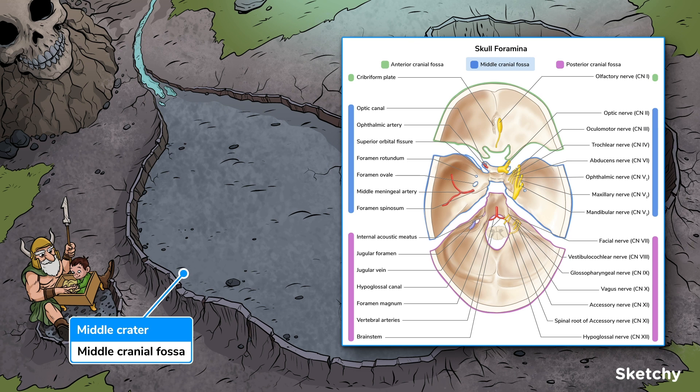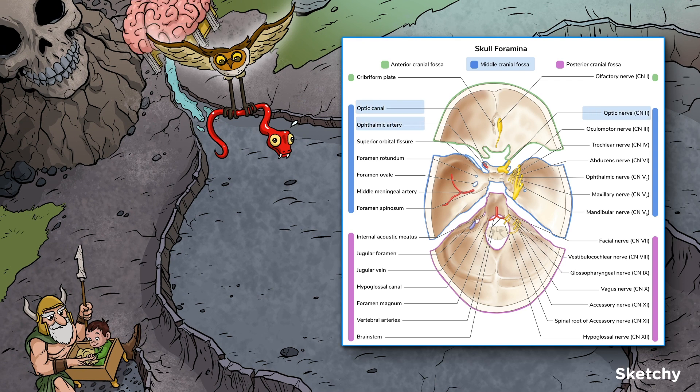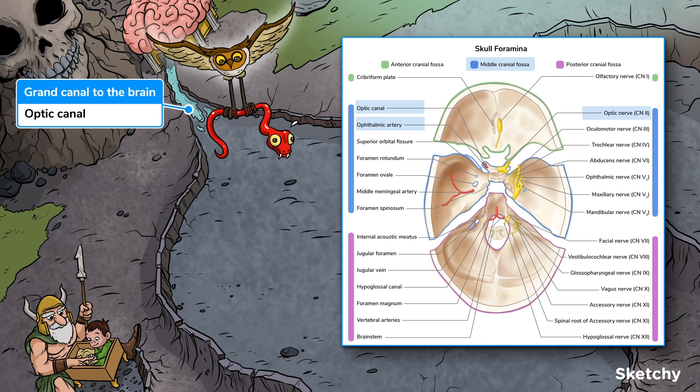So let's go over the major openings in the middle cranial fossa, starting with the optic canal. The optic canal transmits cranial nerve 2, the optic nerve, and the ophthalmic artery into the orbital cavity. So we'll have this grand canal connecting the brain-shaped Viking temple and middle crater represent the optic canal.